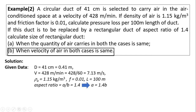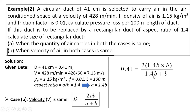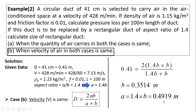For the second criteria — replacing the circular duct with a rectangular duct of aspect ratio 1.4 when velocity is the same — we use the formula D = 2ab/(a + b). Substituting a = 1.4b and the known value of D, and solving, we get b = 0.3514 m and a = 1.4b = 0.4919 m. So in this way we can calculate equivalent dimensions of rectangular duct for a given circular duct. Thank you.